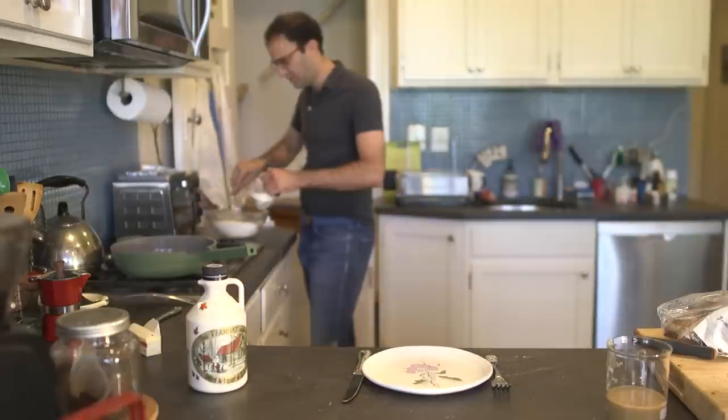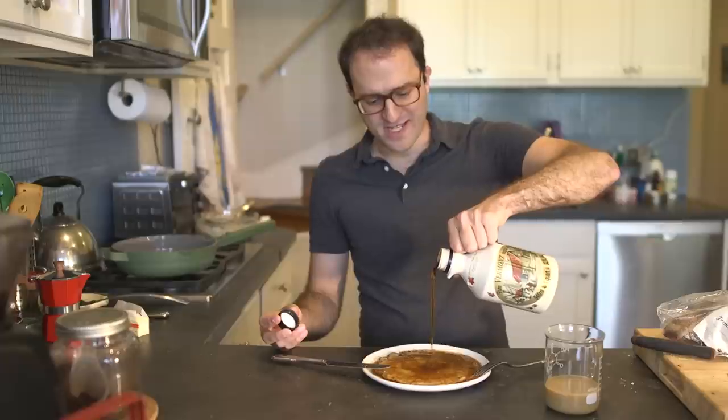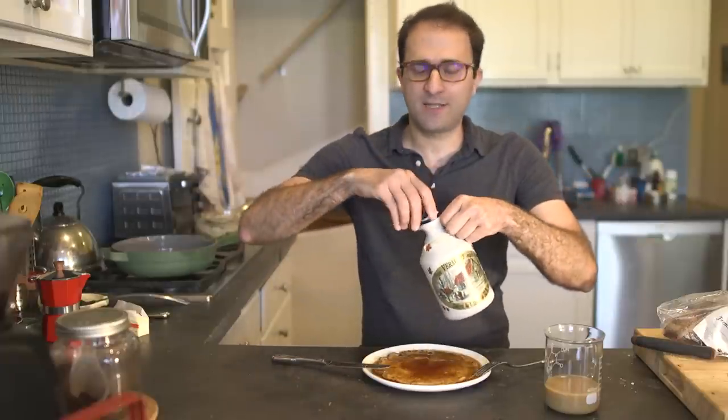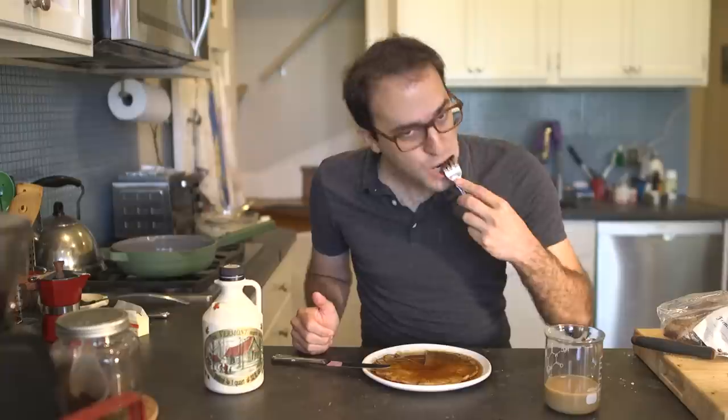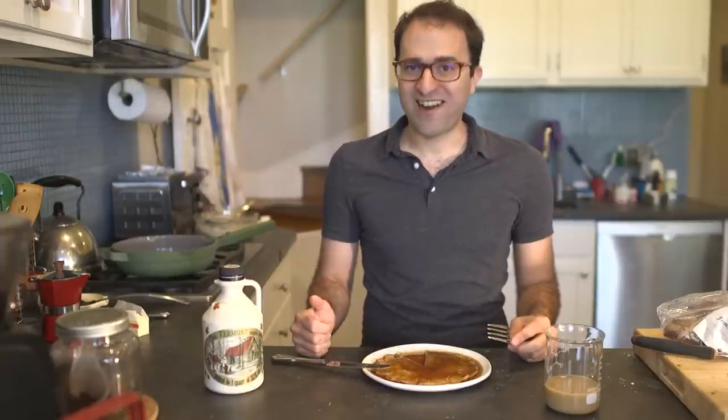I learned a long time ago that I'm a grade B maple syrup guy. It's caramelly, it's dark, it's rich, it's complex. Other than that though, I didn't know much. I had no idea what the different grades meant or how you make them in the first place. And tragically, you can't even get grade B anymore. So I went to Vermont to find out why.